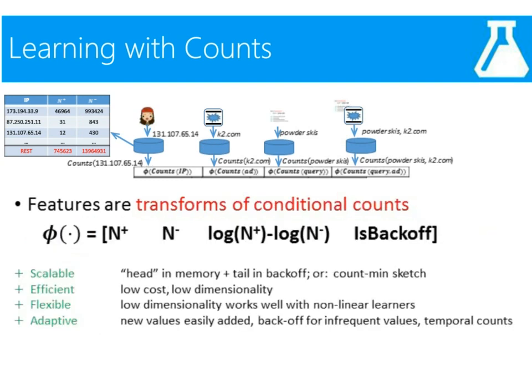This allows us to have a representation that fulfills those goals outlined earlier. The representation is scalable because we can store the head in memory and back off the tail, or compress through sketches. It is efficient because to create the representation for a given example, we're just doing lookups in tables. It's flexible because the resulting representation is low-dimensional, so we can feed it into powerful learners such as Boosted Trees or Neural Nets. And it's adaptive because new values can enter the head, and there are also advanced techniques allowing temporal windows for counts, which makes it straightforward to track time drift and trends.